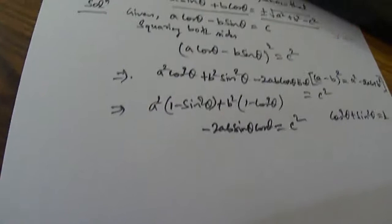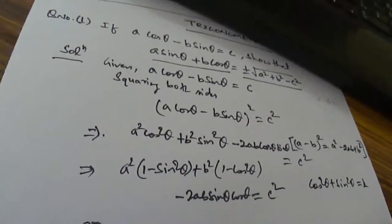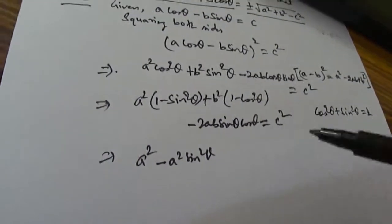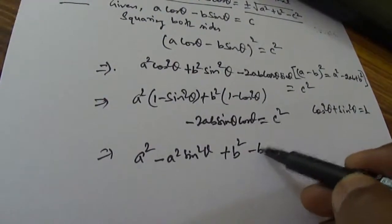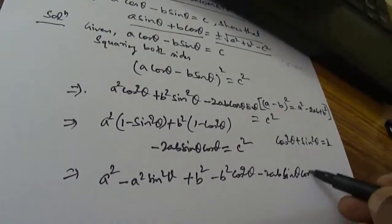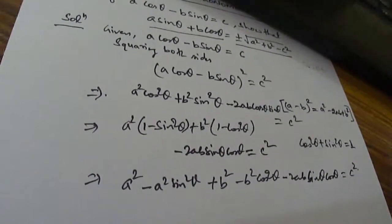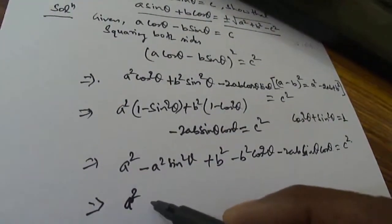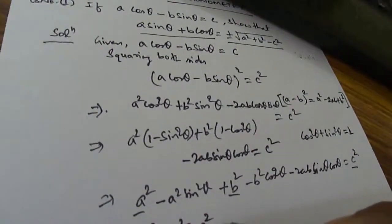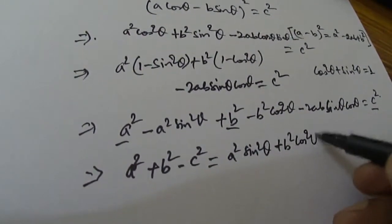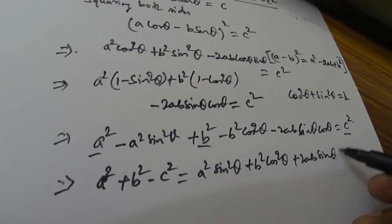So now we will see how it is solved further. We are getting A squared minus A squared sin squared θ, plus B squared minus B squared cos squared θ, minus 2AB sin θ cos θ equals C squared. Now we bring C squared to this side, so it will be A squared plus B squared minus C squared on one side, and A squared sin squared θ plus B squared cos squared θ plus 2AB sin θ cos θ on the other side.